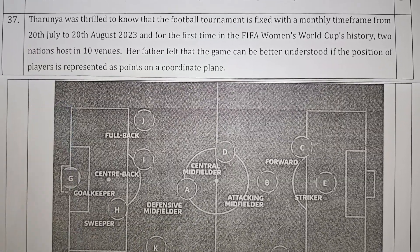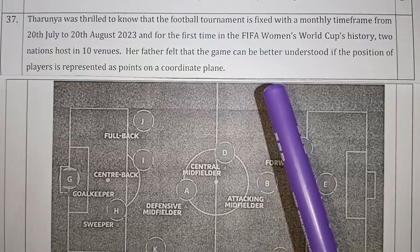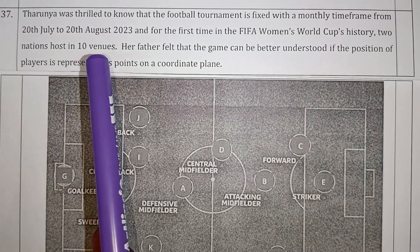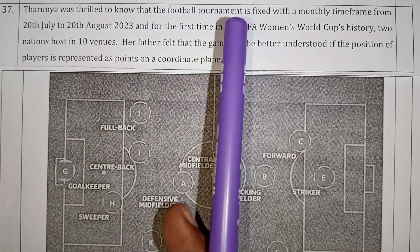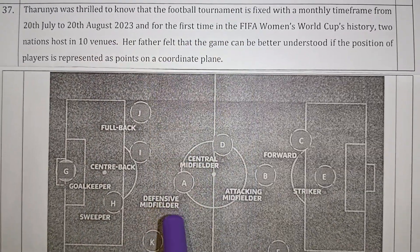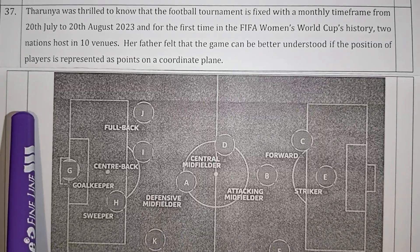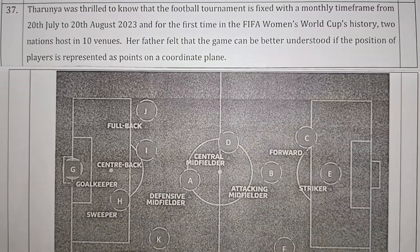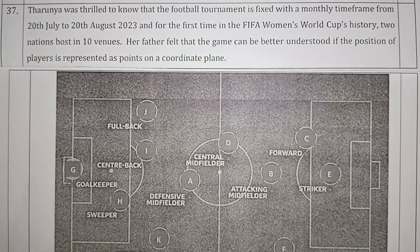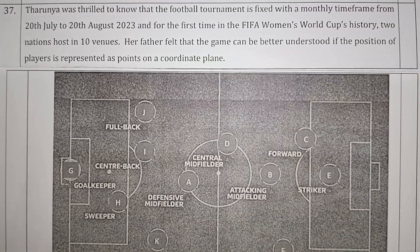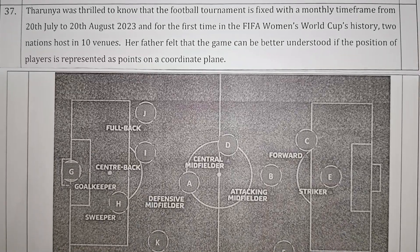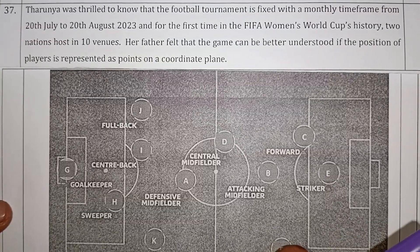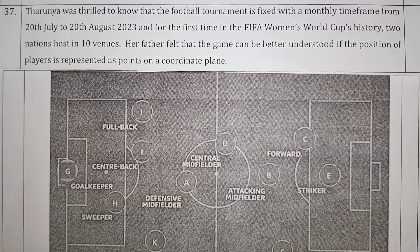The question is based on football. An ornament is fixed with a monthly time frame from 20th July to some date, as shown on this chart. We have a figure with a football card. You can count the points, values and the names — Goalkeeper, Wingback, Centerback — all explained through these questions.